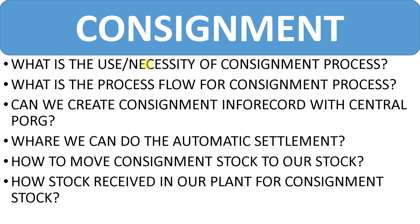A related question is: how is stock received in your plant for consignment stock, and what is the movement type for that? Basically, we do it with movement type 101, but at the item level the movement type will be 101K — 101K is specifically for consignment stock.